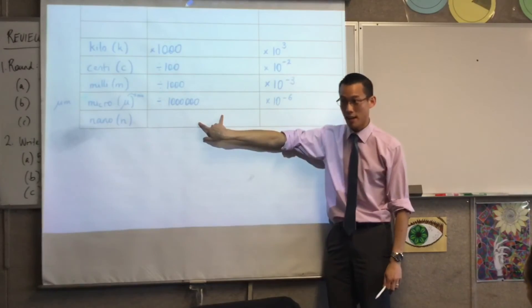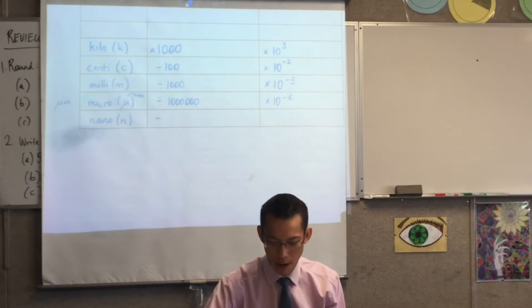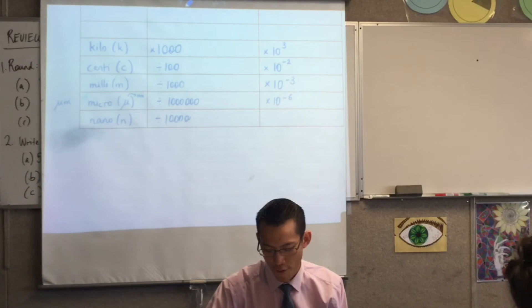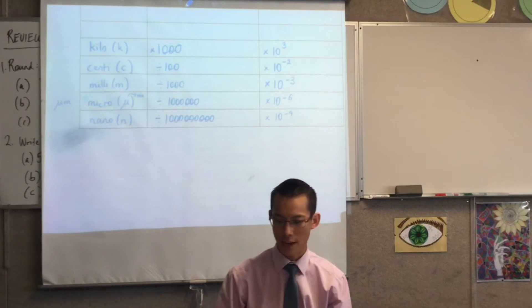The next one is going to be another three zeros, right? So, this will be divided by 1. Count the zeros. 1, 2, 3, 4, 5, 6, 7, 8, 9. Which, of course, means that scientific notation is 10 to the negative 9.